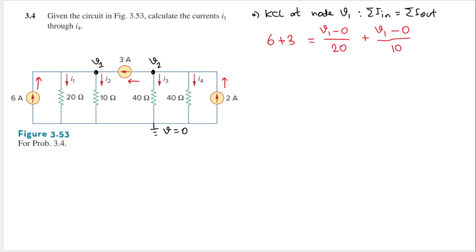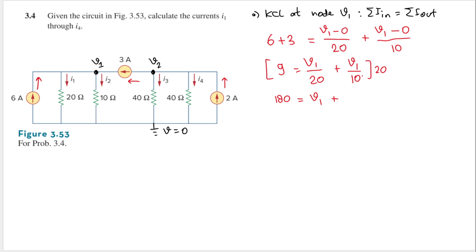6 plus 3 is 9, and V1 minus 0 is just V1, so we have V1 over 20 plus V1 over 10. We can multiply both sides by 20 to eliminate the denominators. So 9 times 20 gives 180, the 20s cancel to give V1, and 10 and 20 cancel to give a factor of 2 — so we have 180 equals 3V1.